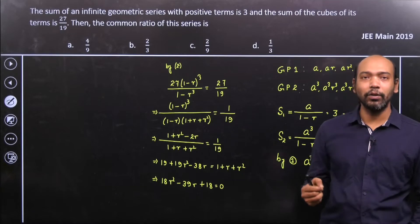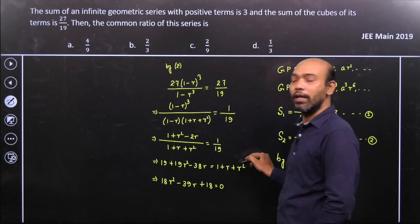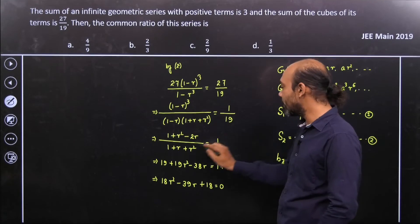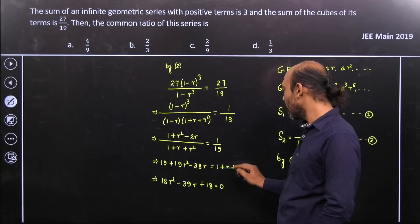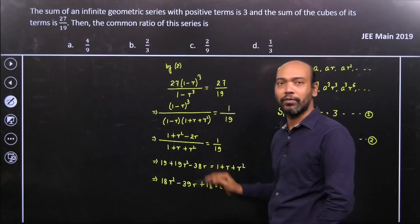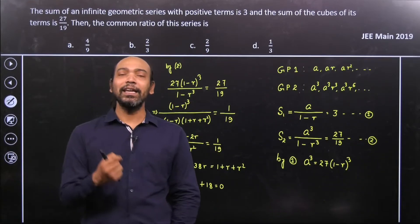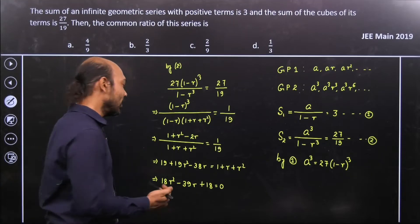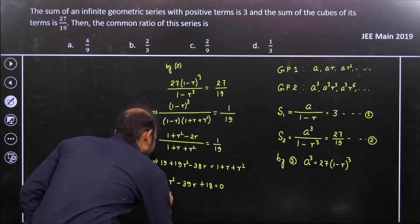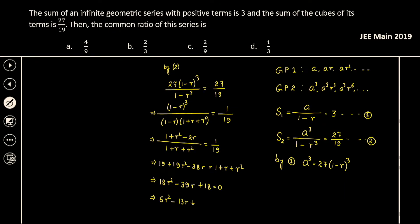We are getting a quadratic equation. Taking all the values together: 18R² − 39R + 18 = 0. We can see that this equation is divisible by 3, so dividing through gives 6R² − 13R + 6 = 0.